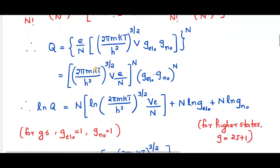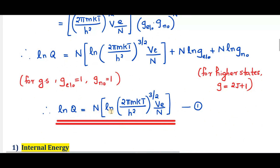We may separate the translational part and the electronic and nuclear energy parts. Now applying log: log Q = N log[(2πmKT / h²)^(3/2) × V × (e/N)] + N log(G_EL0) + N log(G_N0). The degeneracy of the electronic and nuclear ground energy states is equal to 1, so log(1) = 0, and these terms vanish. So the only remaining term is log Q = N log[(2πmKT / h²)^(3/2) × V × (e/N)]. Let that be equation 1.